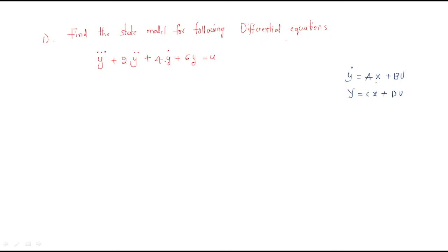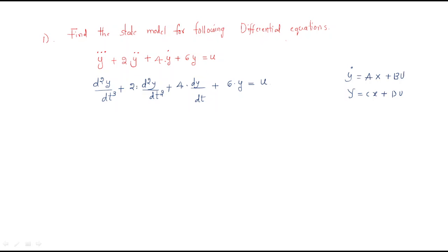First, the given equation is y triple dot. We write it as d³y/dt³ plus 2·d²y/dt² plus 4·dy/dt plus 6y equals u. Whenever a problem is given like this, the first thing to determine is the maximum order. The maximum order here is 3.